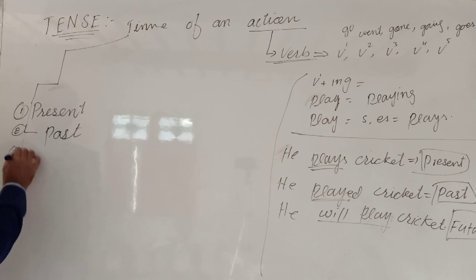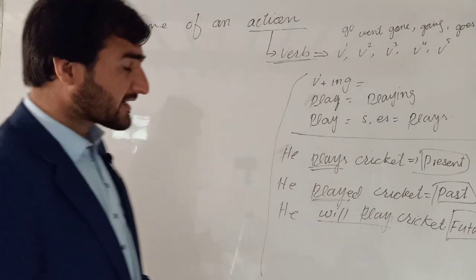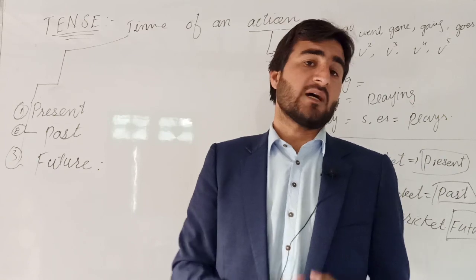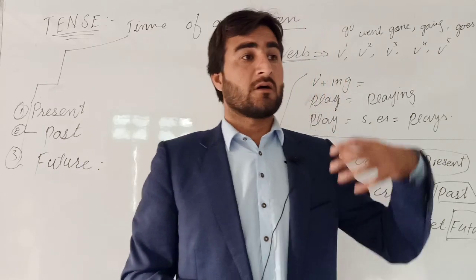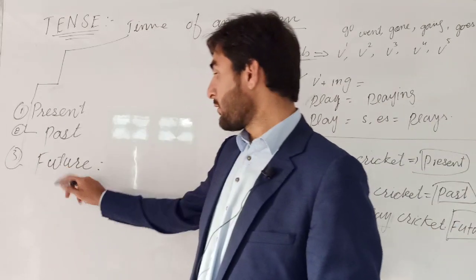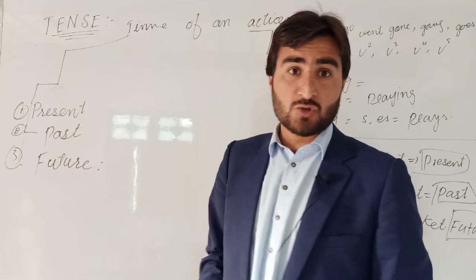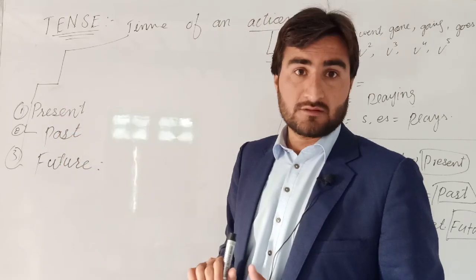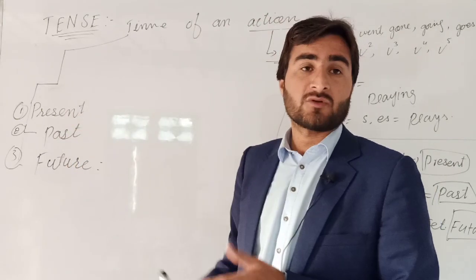Future — the future tense refers to things that are yet to come, things that will happen. For example, 'next year is coming,' 'next month something will happen.' That tool deals with the future. So we have present, past, and future — these are the three main types of tense, each representing a different time.